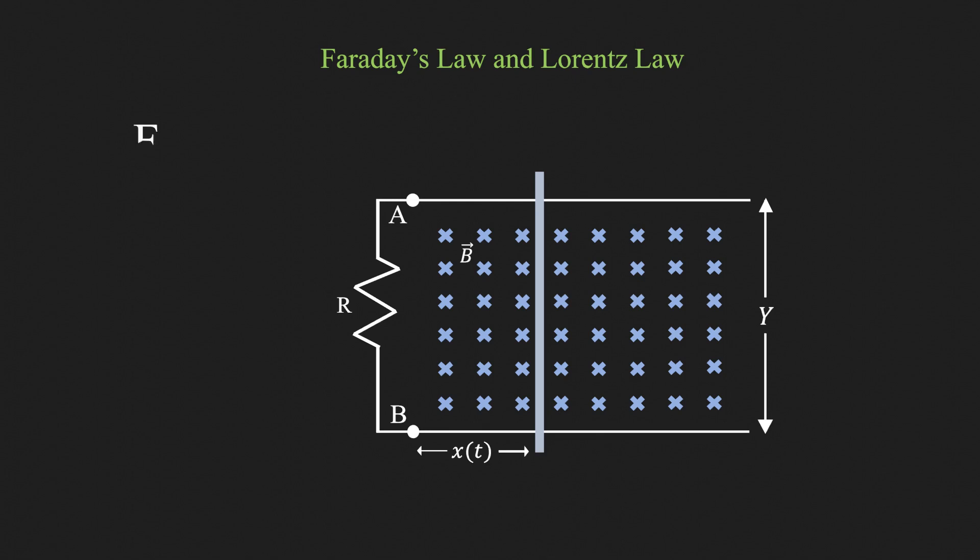We define a new term called flux to denote how much magnetic field is enclosed in a particular area. For example, this loop does not enclose all the field lines. But if I increase the area of the loop, it will enclose more field lines. This is exactly what flux describes and is given by flux density into cross-sectional area.